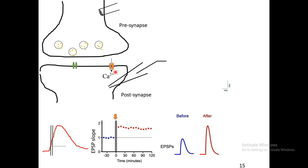You can record from the post-synapse. If you stimulate the pre-synapse, you are going to record post-synaptic activity. There are certain protocols available which can change the synaptic strength. These protocols are the long-term potentiation (LTP) protocol, which can increase the synaptic strength for a long time period, and the LTD protocol, which can reduce the synaptic strength for a long time.